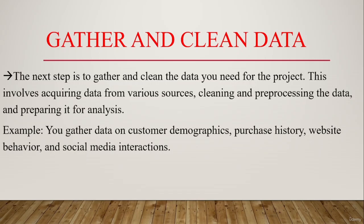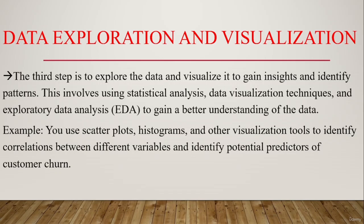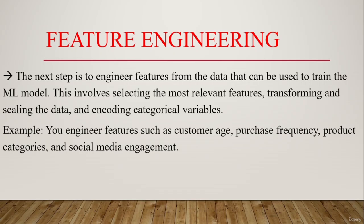The third step is data exploration and visualization — exploring the data to gain insights and identify patterns using statistical analysis and visualization techniques. For example, using scatter plots and histograms to identify correlations between variables and potential predictors of customer churn. The fourth step is feature engineering, where we identify the most important features from the data to train the machine learning model, selecting relevant features, transforming and scaling the data, and encoding categorical variables — such as customer age, purchase frequency, product categories, and social media engagement.